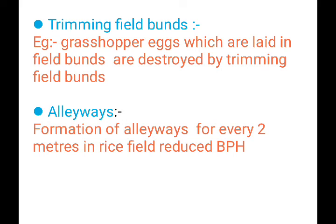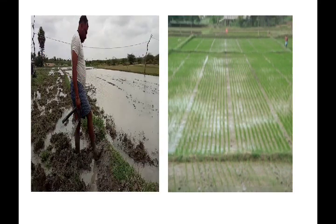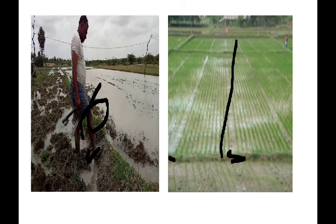Trimming of field bunds — we trim and cut the bunds around rice fields. We trim all the bunds over the rice fields. This is the trimming of field bunds. These are the different types of cultural methods in IPM.